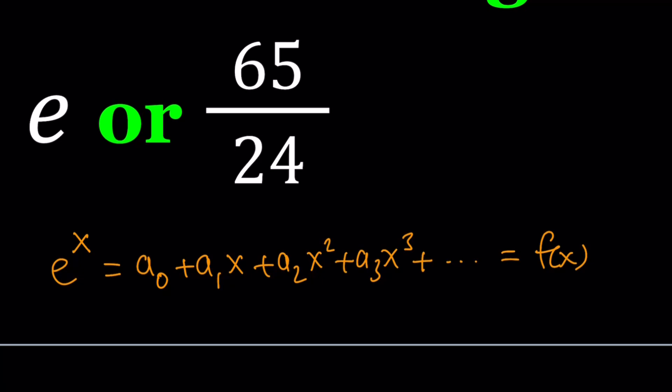First of all, before you get into any derivatives, notice that you can replace x with zero everywhere. If you do that, you're going to get e to the power of zero equals everything will be zero except for a sub zero. So e to the power of zero is one. So that means a sub zero is one. We already found the first coefficient without differentiating anything.